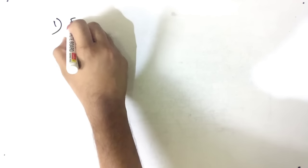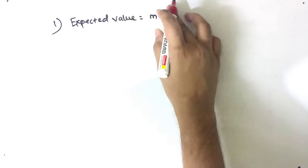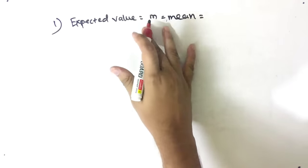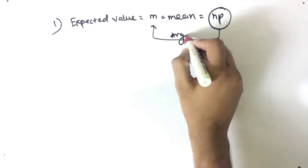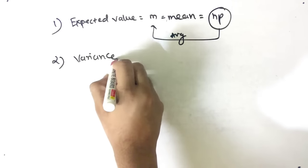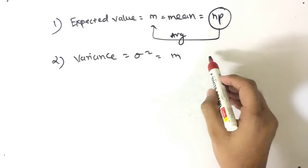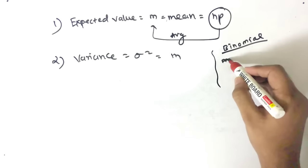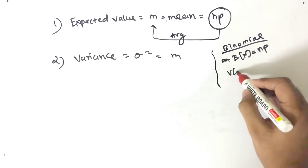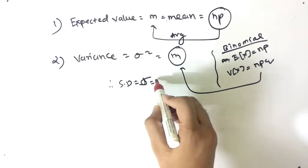Now the properties of Poisson distribution. The first property is the expected value, represented as m, also known as mean, and it equals np. If n is not given, we directly use m as the average. The second property is variance, sigma squared, which also equals m. This is unique because in binomial distribution the variance is npq, whereas here variance equals m. Standard deviation is sigma, which is the square root of m.